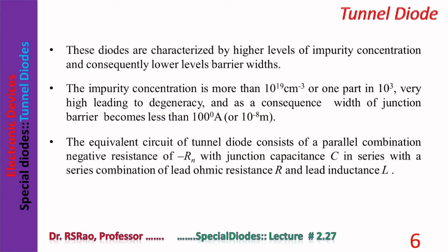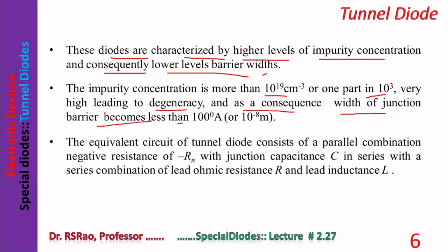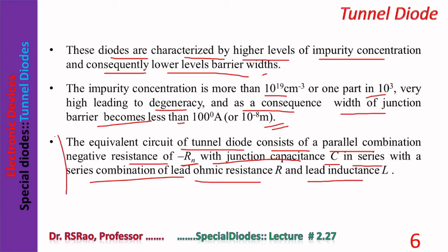Some points regarding tunnel diodes: these diodes are characterized by higher levels of impurity concentration and consequently lower levels of barrier width. Impurity concentration is more than 10 to the power 19 per cm³, or one part in 10 to the power 3 — very high, leading to degeneracy. As a consequence, the width of the junction barrier becomes less than 100 Angstroms, or 10 to the power minus 8 meters.